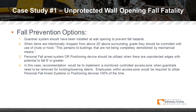Fall prevention options for case study one: a guardrail system should have been installed at the wall openings to prevent the fall hazard. When items are intentionally dropped from above 20 feet surrounding grade, they should be controlled with a chute or hoist — for buildings not being completely demolished by mechanical means such as an excavator. Personal fall arrest systems or positioning devices should be utilized when there are unprotected edges with the potential to fall six feet or greater. A monitored controlled access zone should be implemented when guardrails need to be removed for hoisting, with employees required to utilize personal fall arrest systems 100% of the time.